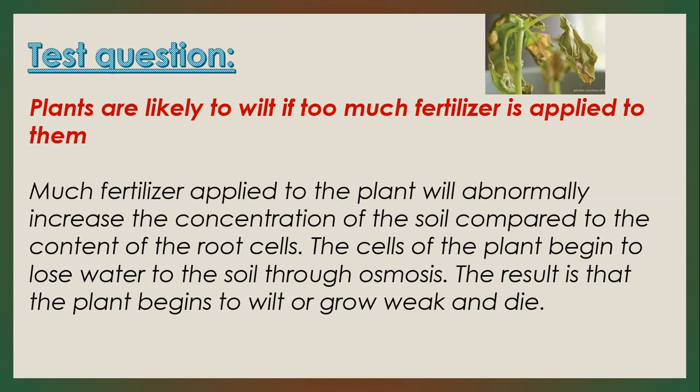When too much fertilizer is applied to the plant in the soil, the concentration of the soil becomes abnormally high compared with the lower concentration in the cells of the root. By osmosis, water — which is more concentrated in the root — begins to move out of the root into the soil. As water is lost from the root, it triggers water molecules from other parts of the plant to come and fill the spaces left in the root cells. This continues until water is lost throughout the plant, and the plant grows weak as if the leaves have been exposed to heat — resulting in wilting.